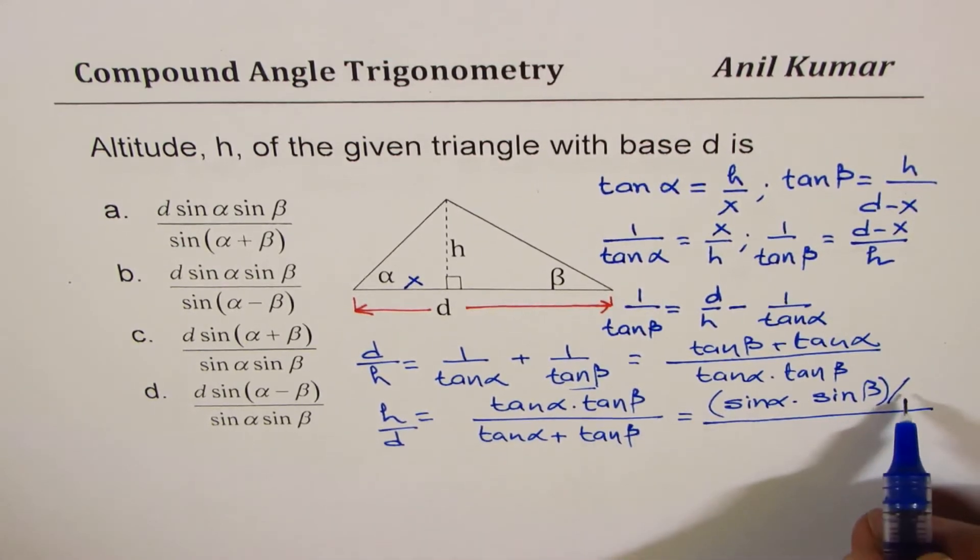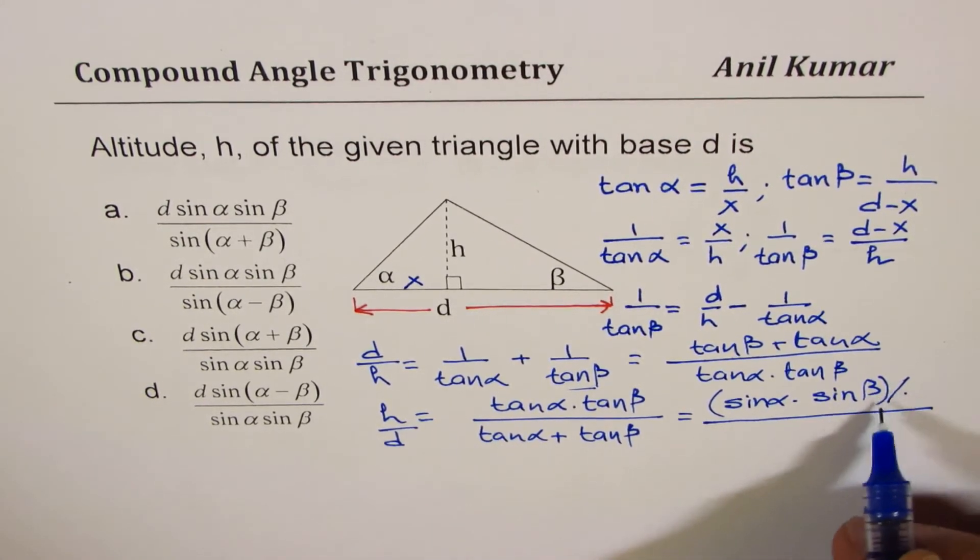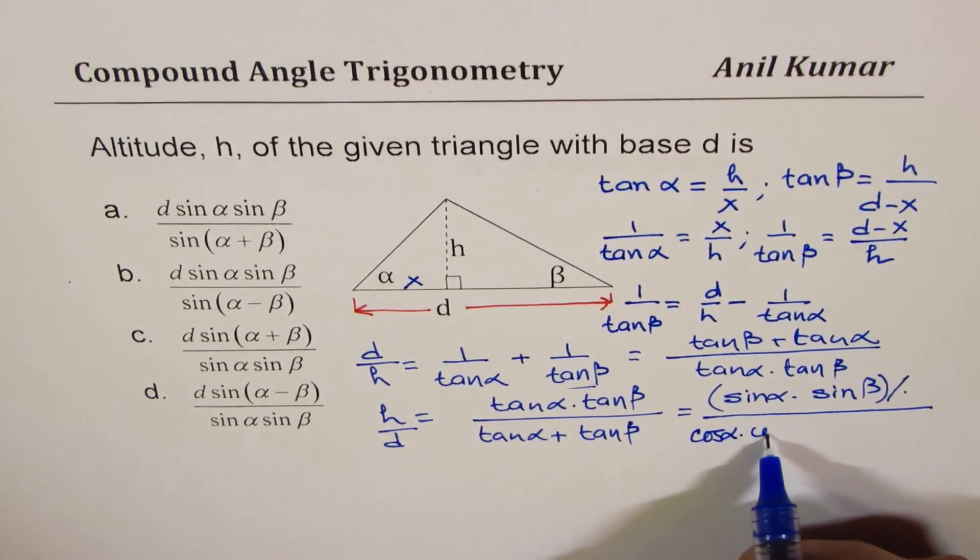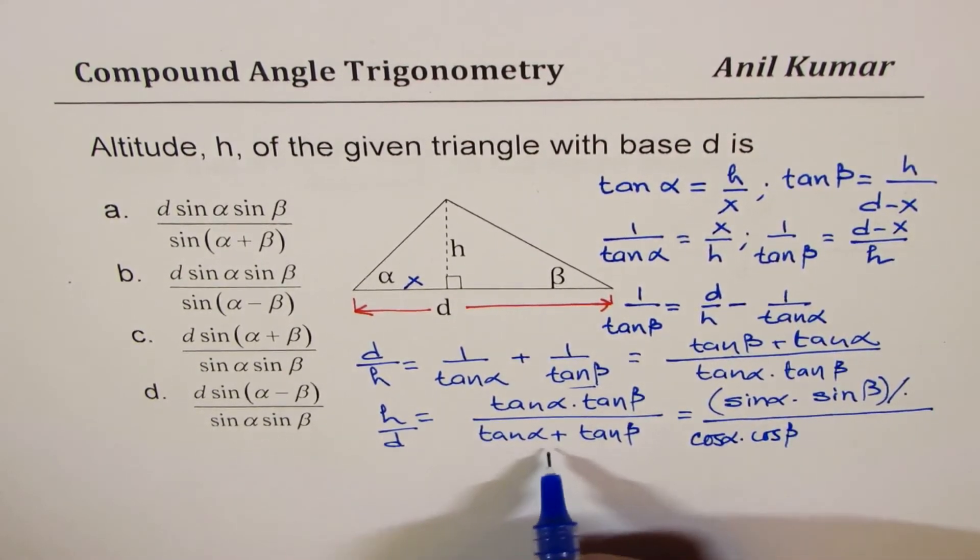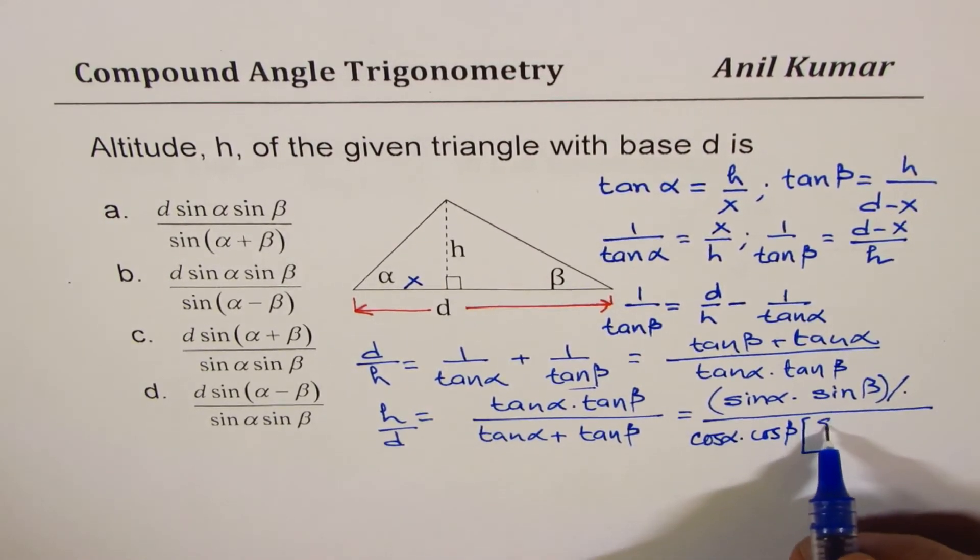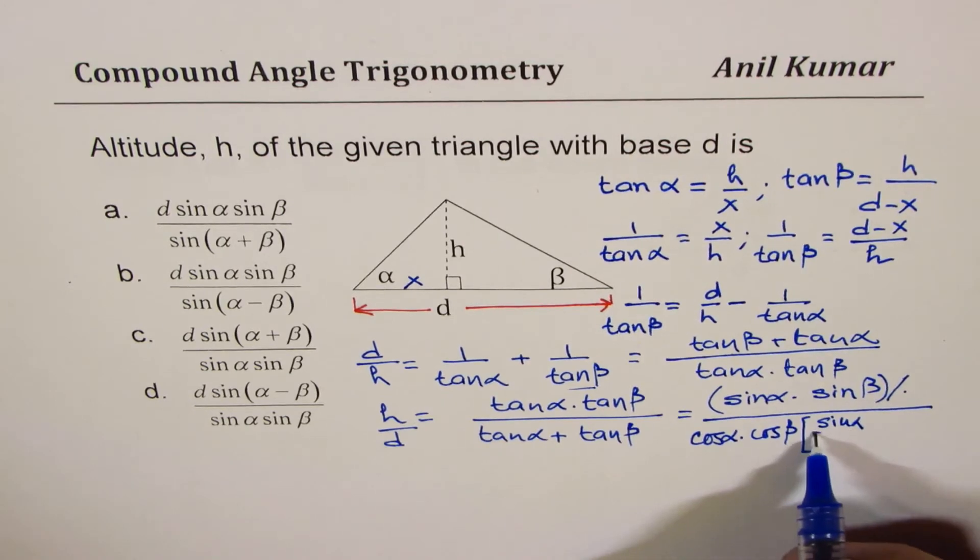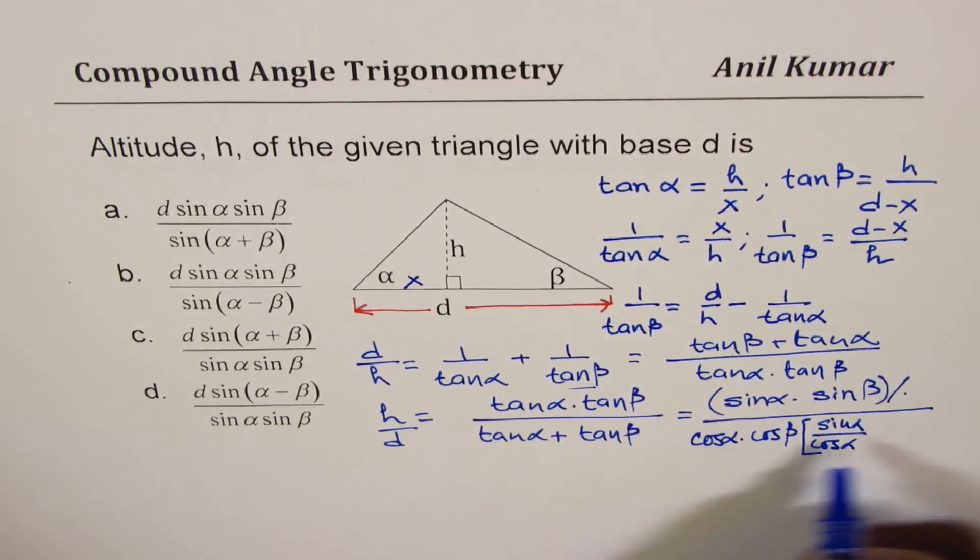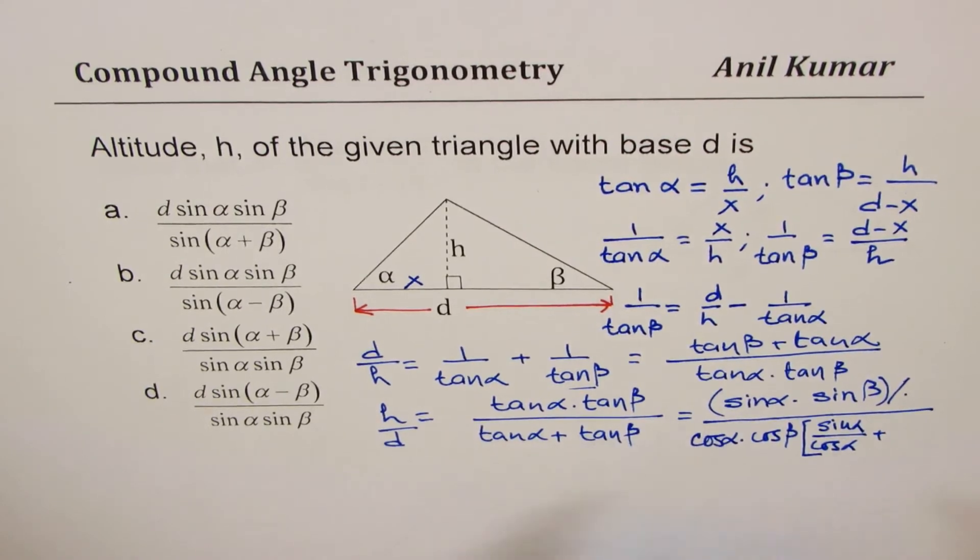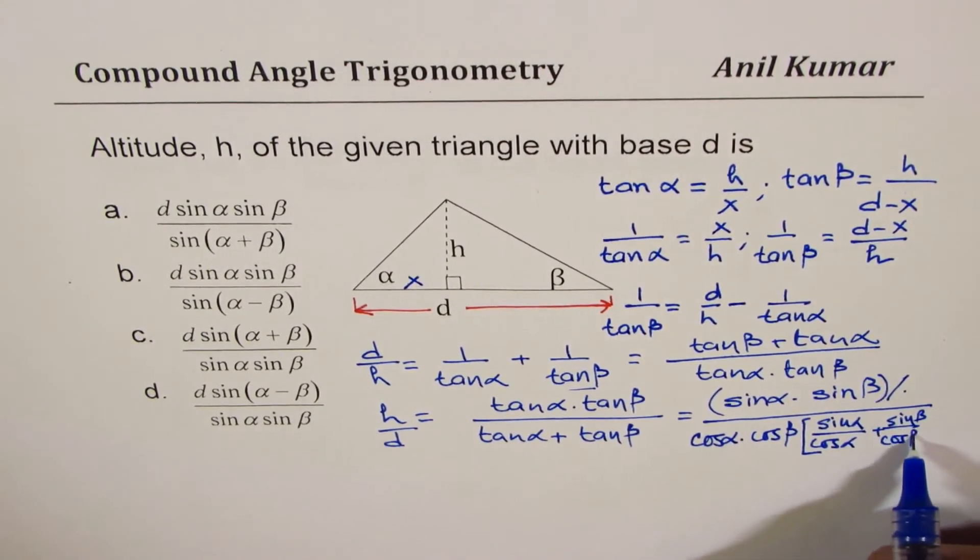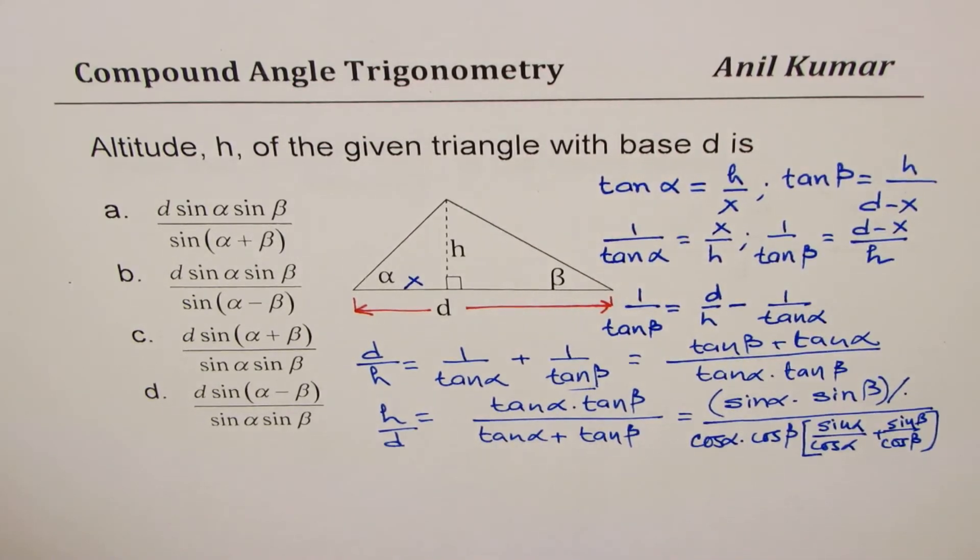Instead of writing like this let me write as cos α times cos β. And what we have here is tan α which is sine α over cos α, plus tan β which is sine β over cos β, does that make sense to you?